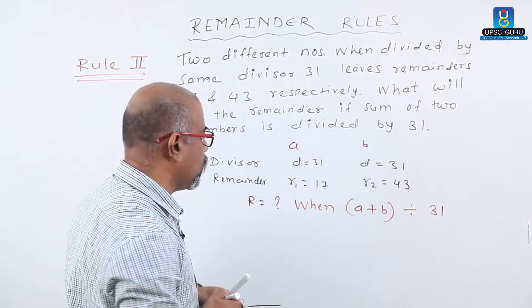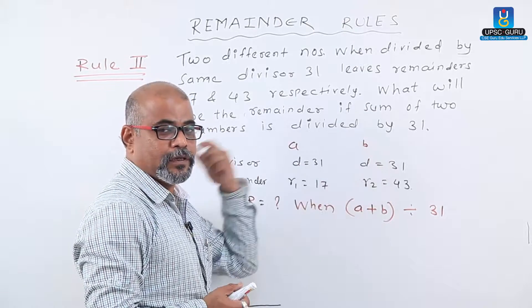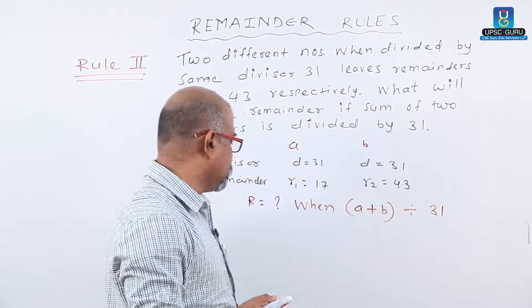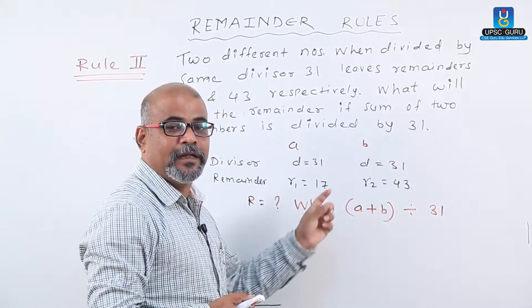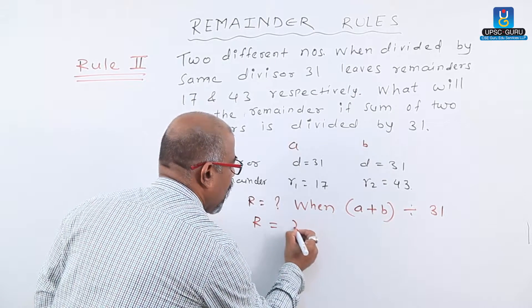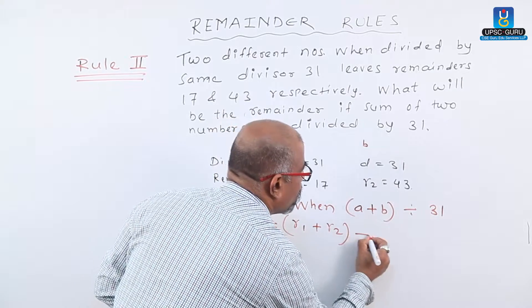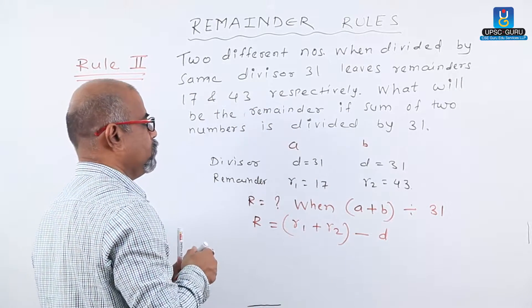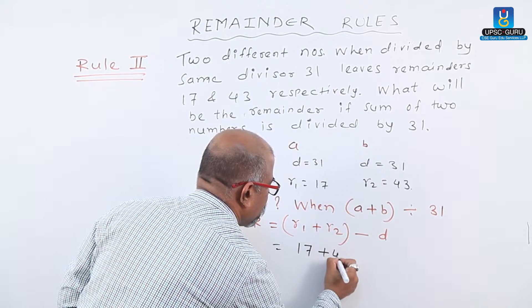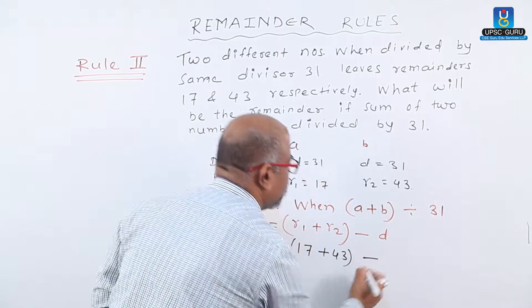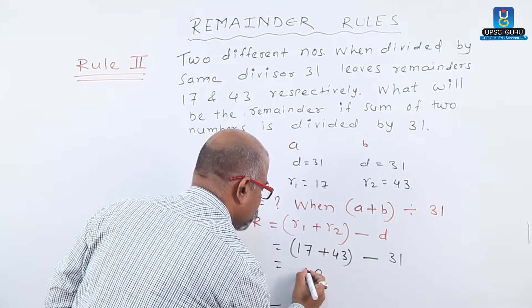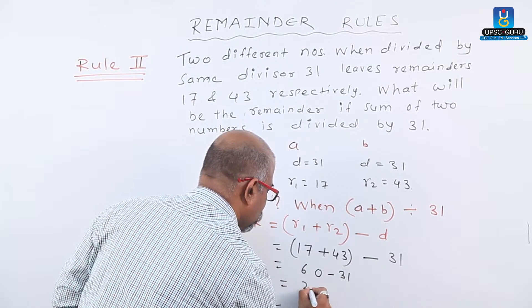According to this second rule, when two different numbers are divided by the same divisor and give two different remainders, and the sum of these two numbers is divided by the same divisor, our required remainder R equals R1 plus R2 minus D. So R equals 17 plus 43 minus 31, which gives us 60 minus 31, equals 29.